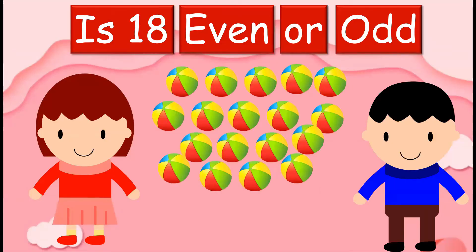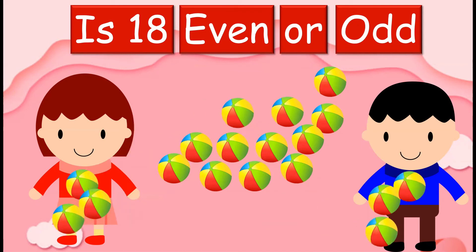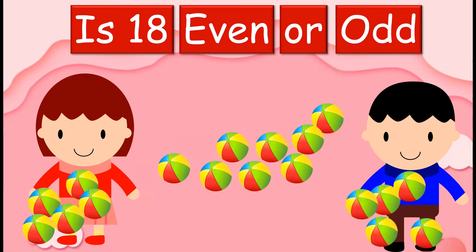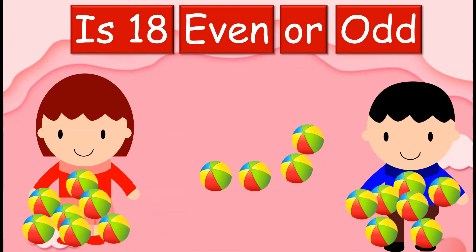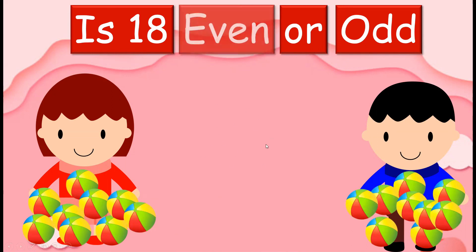Is 18 even or odd? There are 18 balls. We are going to give them to this girl and this boy — we will make them as partners. If there are any balls left out in the middle, that means 18 is an odd number. If there is no ball left out in the middle, then 18 is an even number. Let's group the balls as partners: partner 1, 2, 3, 4, 5, 6, 7, 8, and the last partner, 9. We don't have any balls in the middle — that means number 18 is an even number.